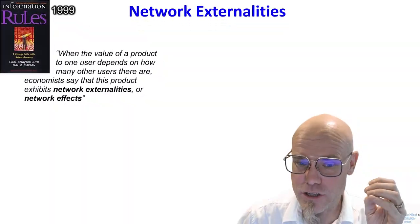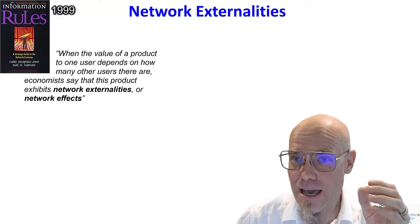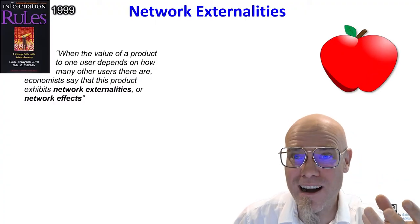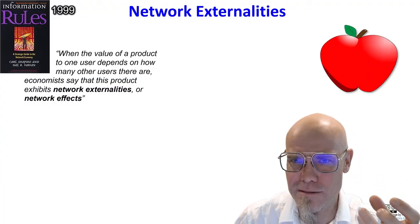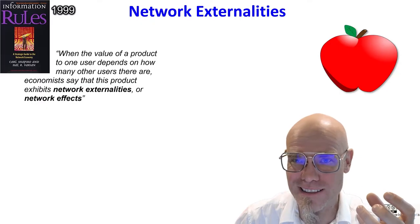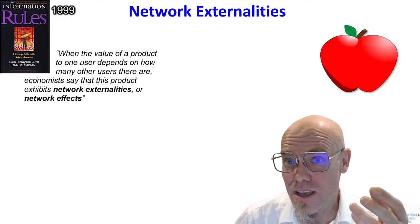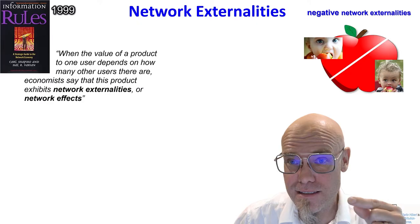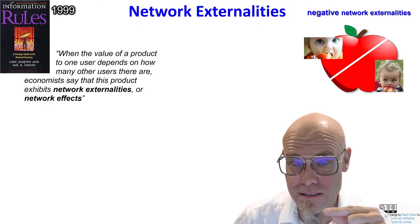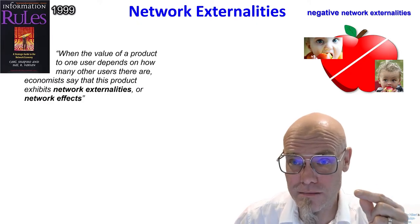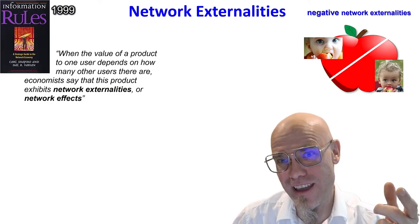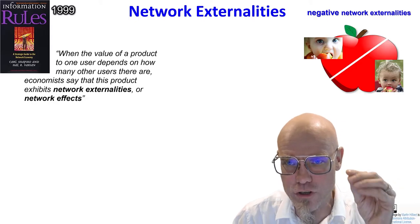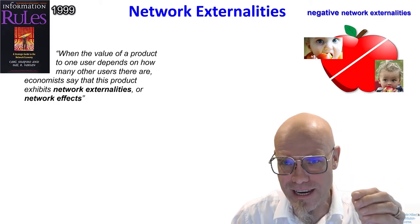In the industrial age, if you have something tangible — like an apple or a car, a product you can touch — if you have more people using it, everybody gets less. So if two people share an apple and they're fair, everybody gets half. The more people you have using it, that's the law of scarcity.